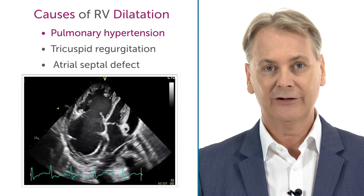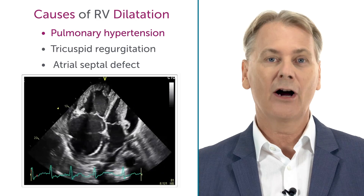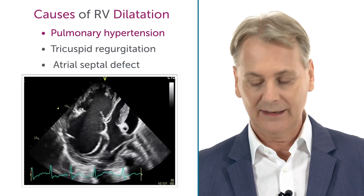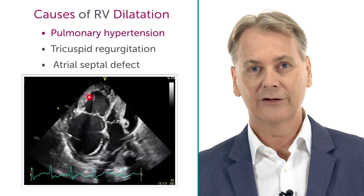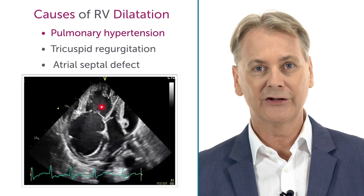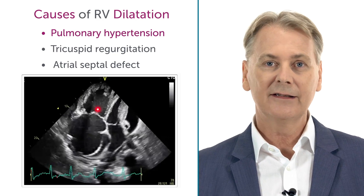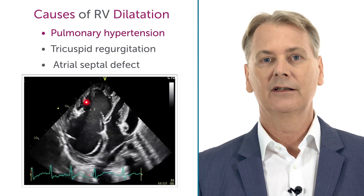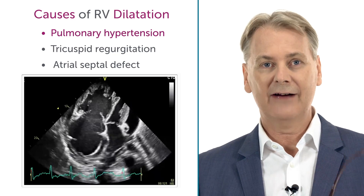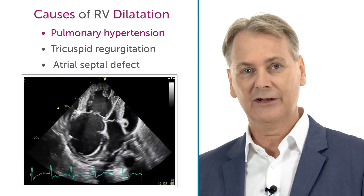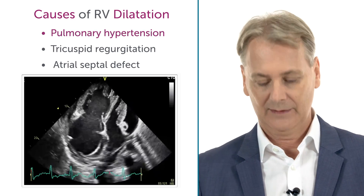Pulmonary hypertension — we talked about that already in the chapter on physiology. In this situation, you usually will have the first reaction of the ventricle to dilate.